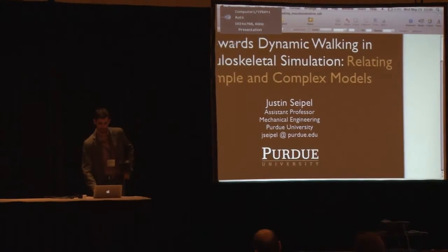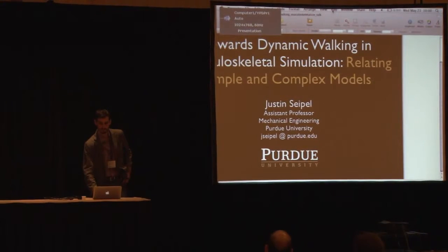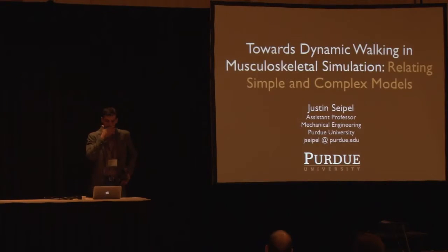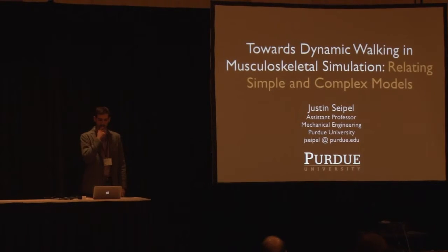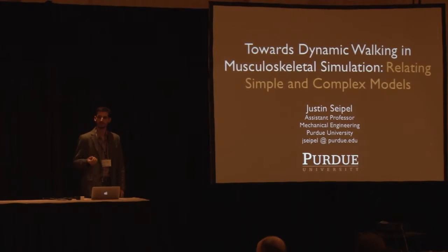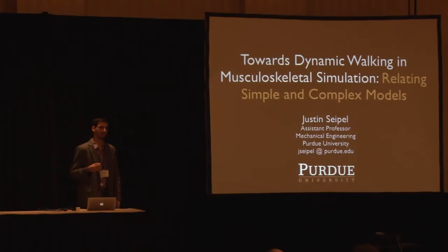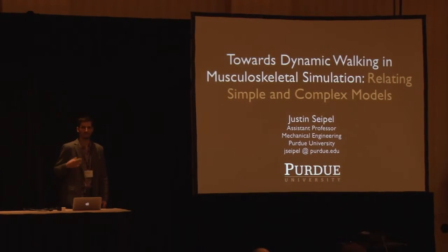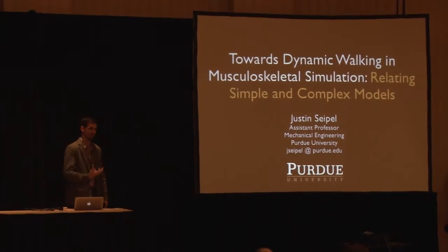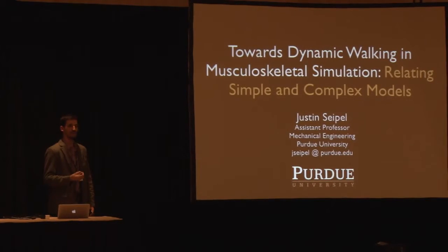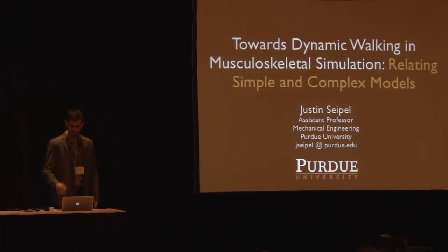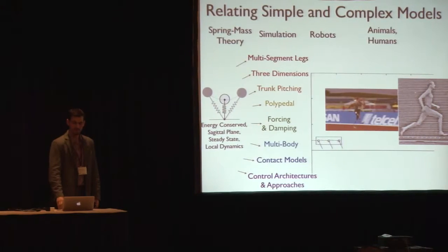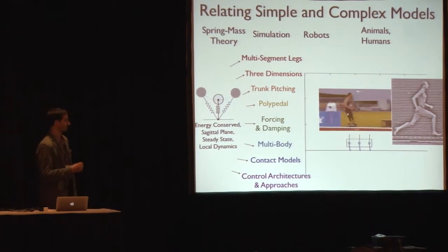I have a two-part title here because I want to talk about this in a slightly more general context. The second part is relating simple and complex models. I had the good fortune of talking about a model yesterday — a hip-torqued and leg-damped model — for which we looked at some fundamental issues involving how the stability changes once we add some torque and damping to SLIP. I want to keep going in this vein of relating simple to complex models.